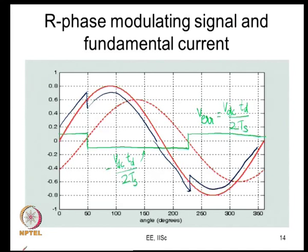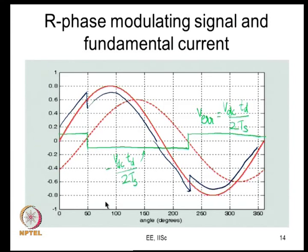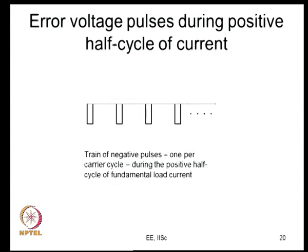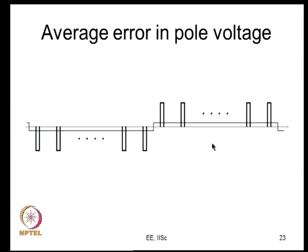It is also clear what you can do to compensate: because of dead time, a square wave is introduced in phase with the fundamental current with a particular amplitude. To correct this, you take the inverse of that square wave and add it to the modulating signal - that is the essence of dead time compensation.